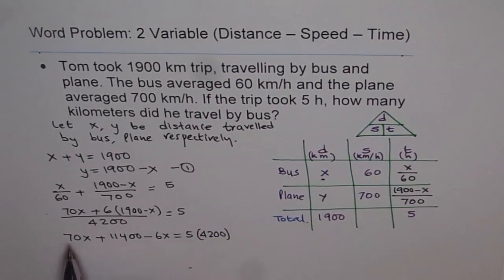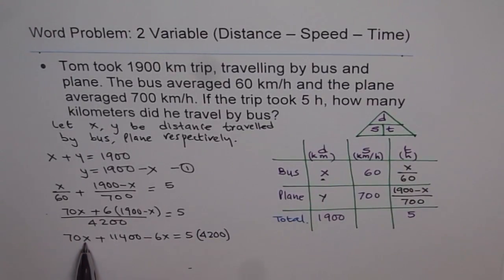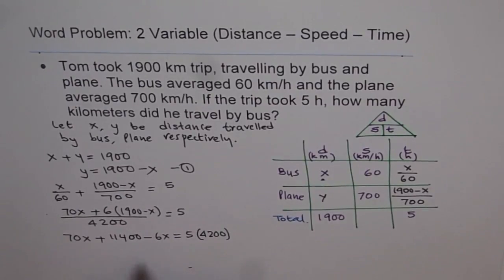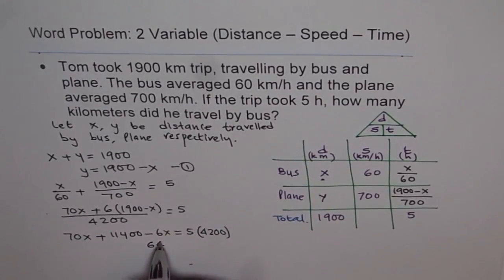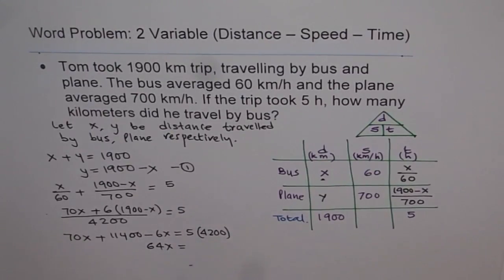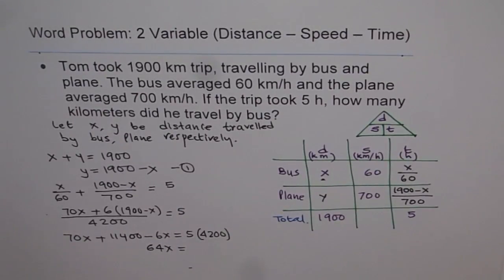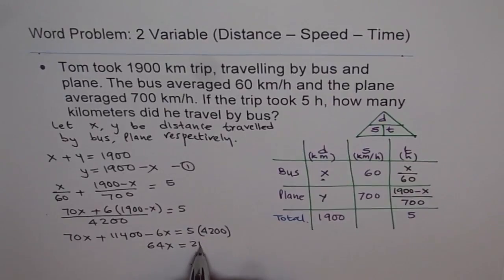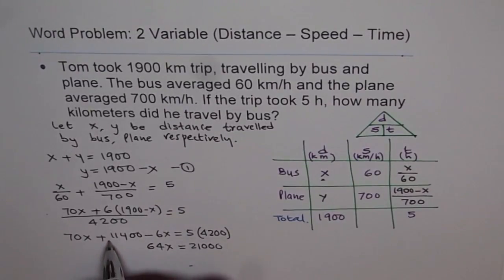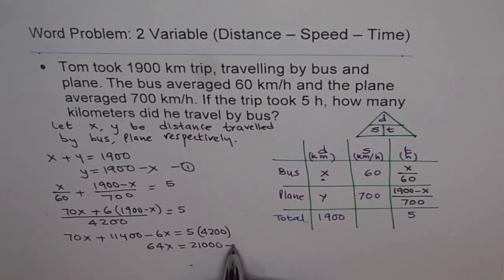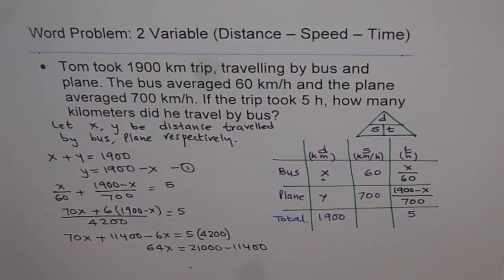Now this 70X minus 6X will give us 64X equals, we'll have here 4200 times 5, which is 21,000 minus 11,400.